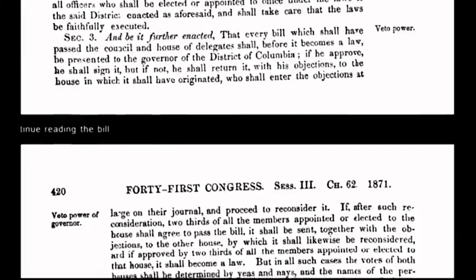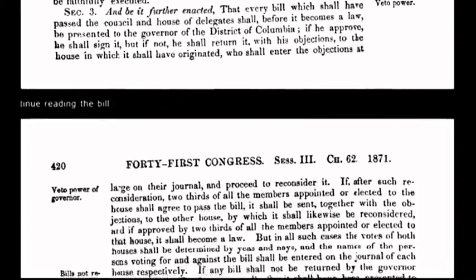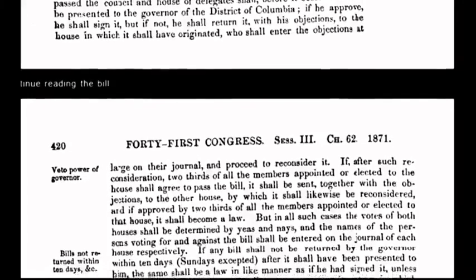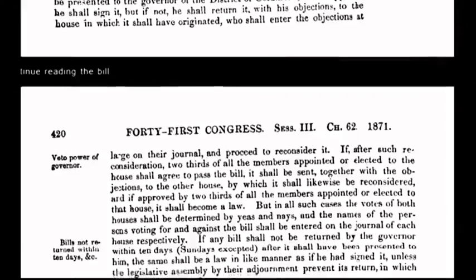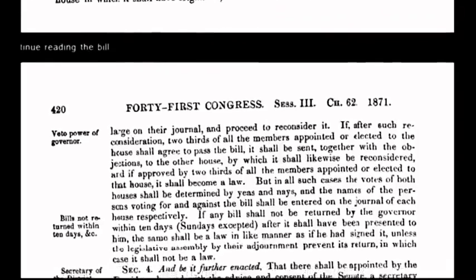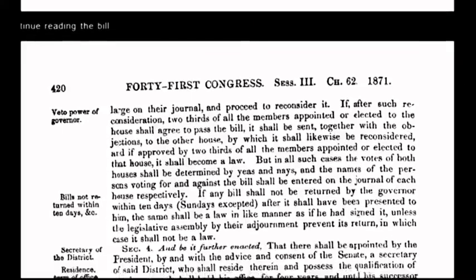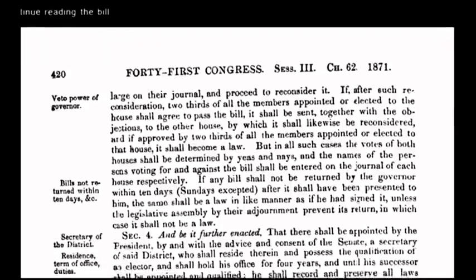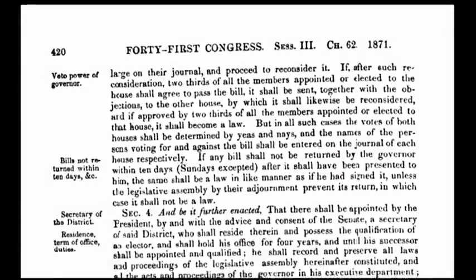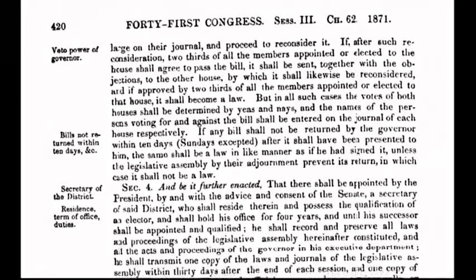Instead of having absolute and unalienable rights guaranteed under the organic constitution, we the people now have relative rights or privileges. One example is a sovereign's right to travel, which has now been transformed under corporate government policy into a privilege that requires citizens to be licensed — an example would be passports. By passing the Act of 1871, Congress committed treason against the people who were sovereign under the grants and decrees of the Declaration of Independence and the organic Constitution. The Act of 1871 became the foundation of all the treason since committed by government officials. The United States isn't a country — it's a corporation.